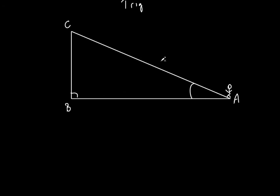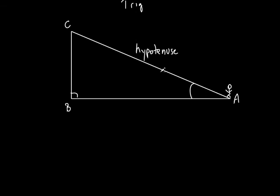What would I call the hypotenuse? How do you know it's the hypotenuse? Because it's opposite the right angle. So we call that the hypotenuse — that's the really important one. The side that's opposite the right angle is the hypotenuse, and it's got its own special name because of that.